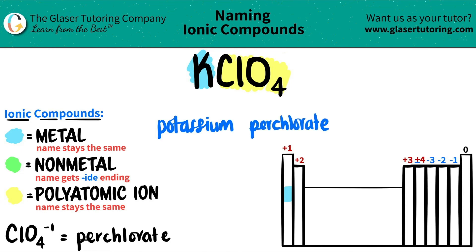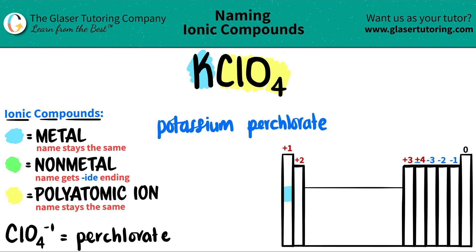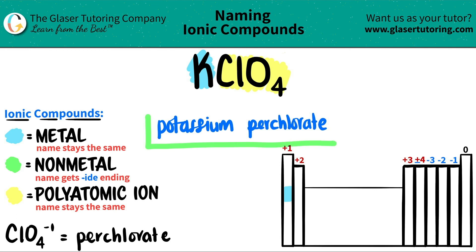Now just see if you need a Roman numeral. Roman numerals are used for transition metals, but since potassium is not in this block on the periodic table, we don't need it. This is the transition metal block. So we're done — KClO4 is just potassium perchlorate. And that's it.